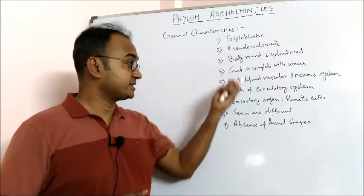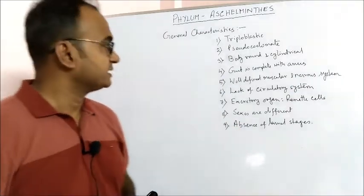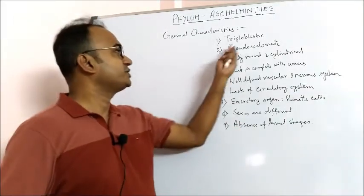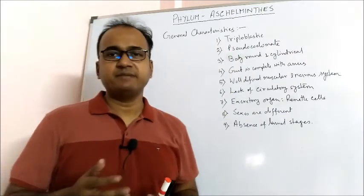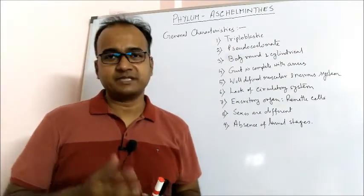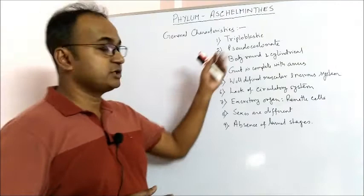These are the characteristics of the phylum Aschelminthes. First, they are triploblastic, meaning they have three body layers: ectoderm, endoderm, and mesoderm. They are pseudocoelomate.